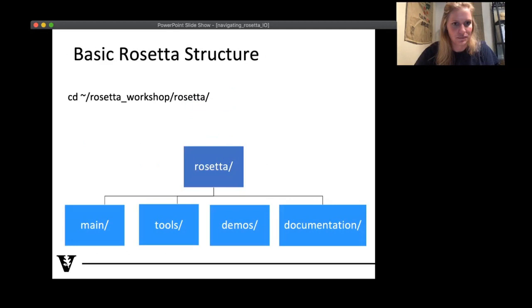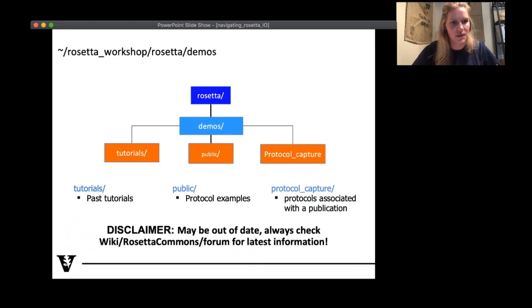Okay. So in demos, this is where the past tutorials live. The ones that you're going to be doing over the course of the next couple of days. There's also some protocol captures from the supplementary material of different papers that you may have read. And then just some other protocol examples located in public here. Some of this may be out of date. We try our best to keep things up to date. But just FYI, if you run into problems, please just let us know. I will say that when I was learning Rosetta, kind of on my own, before graduate school, I lived in this directory. It was incredibly useful for me to figure out how protocols work. This is an incredibly useful directory, Rosetta demos, in understanding how things in Rosetta are run.